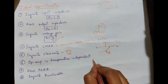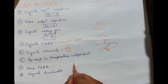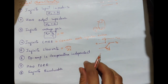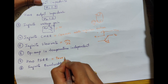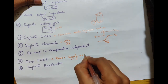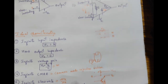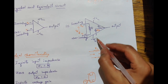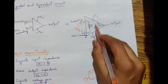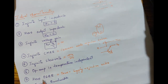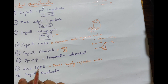Next, the op-amp is temperature independent, meaning that when there is a change in temperature the op-amp characteristics will not change; they remain constant for different temperatures. Next is zero PSRR, where PSRR stands for Power Supply Rejection Ratio. We have two power supplies, plus VCC and minus VCC, and whenever there is a change in power supplies the output voltage would change. To reduce that effect, the power supply rejection ratio is made zero. Finally, the op-amp has infinite bandwidth. These are the characteristics of the ideal op-amp.